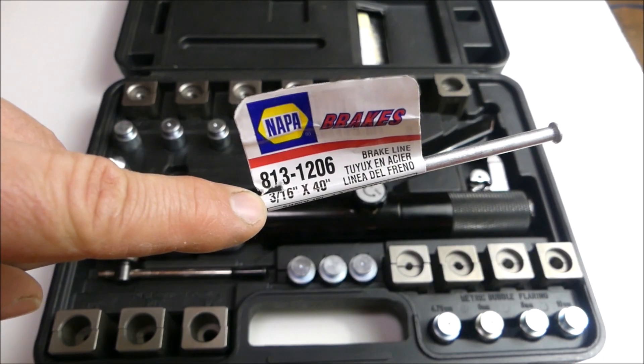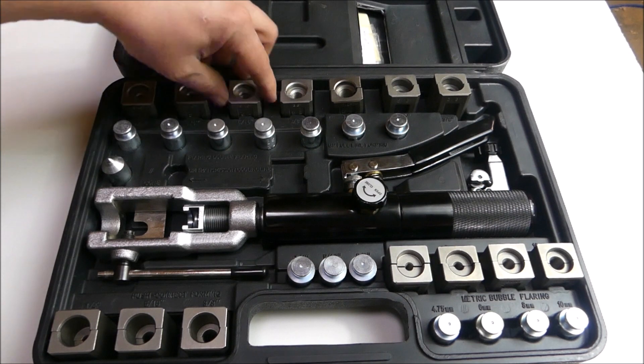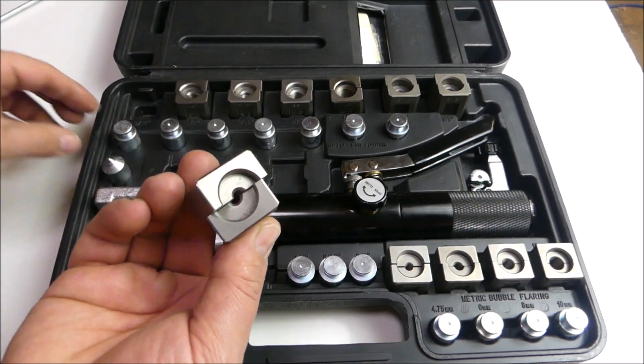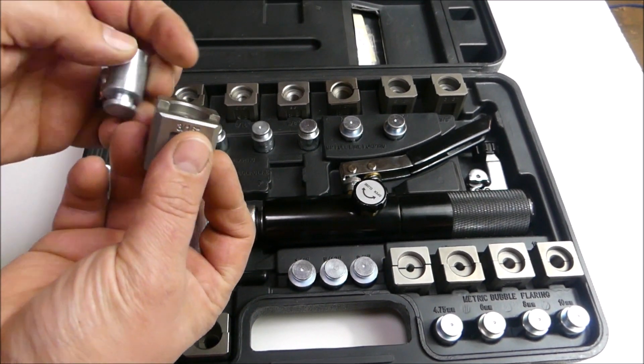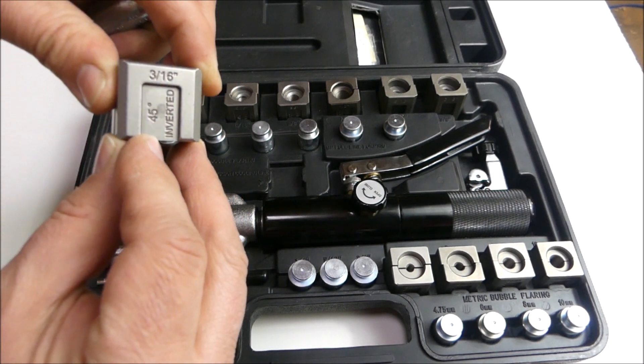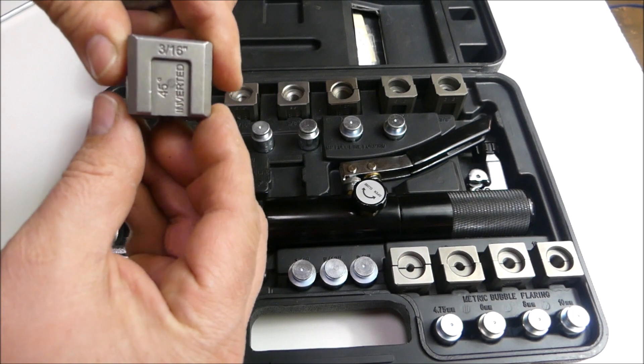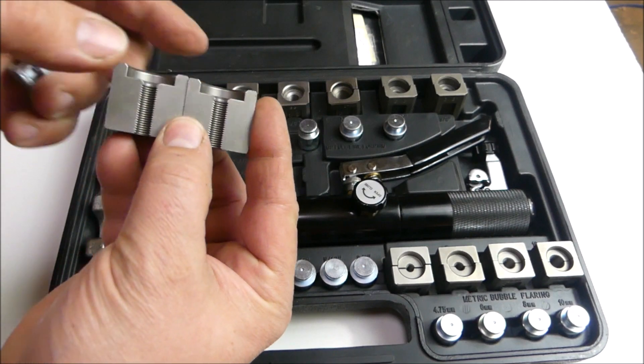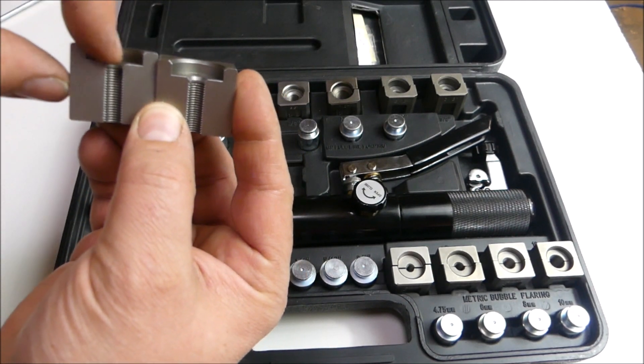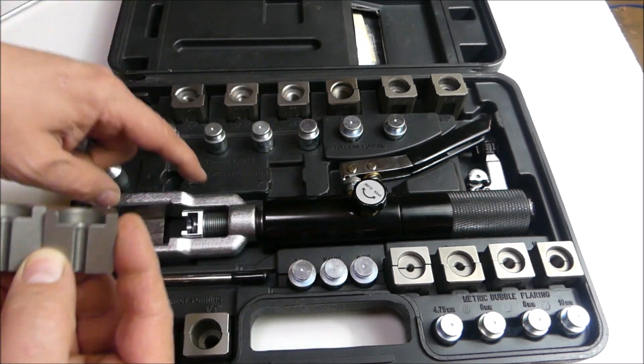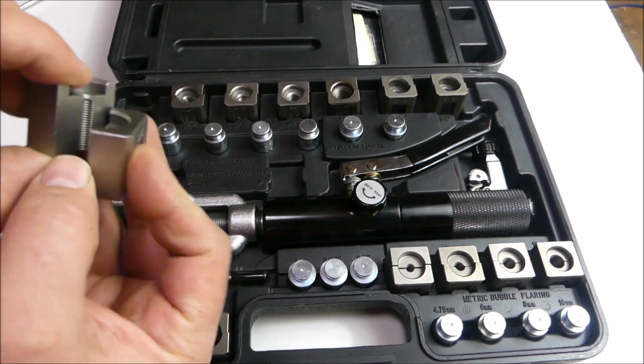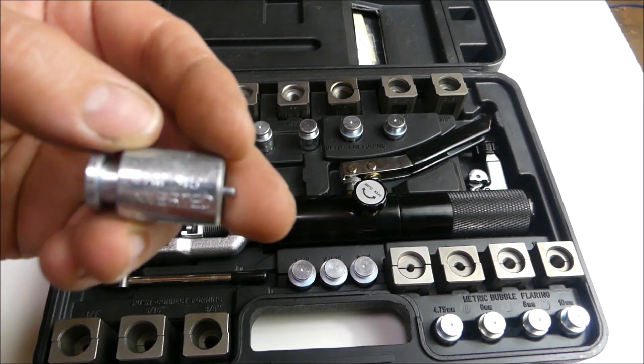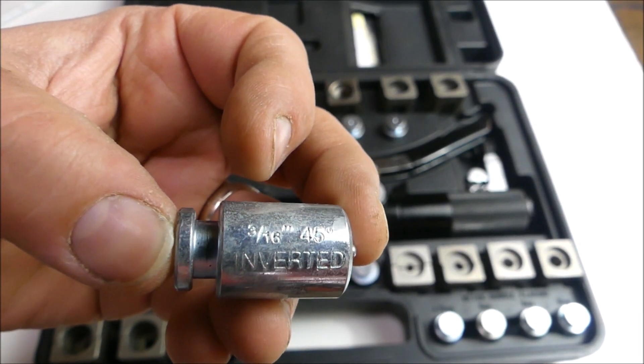We have 3/16ths brake line, so we will need to find the 3/16ths dies. It will say 3/16ths, 45 degree inverted, and you'll notice that one side is flush at the bottom, and one side has this indent in it. The side with the indent is the side that goes towards the handle of the tool. You'll also need this little piece that makes the first half of the flare, and on it it'll say 3/16ths, 45 degree inverted.